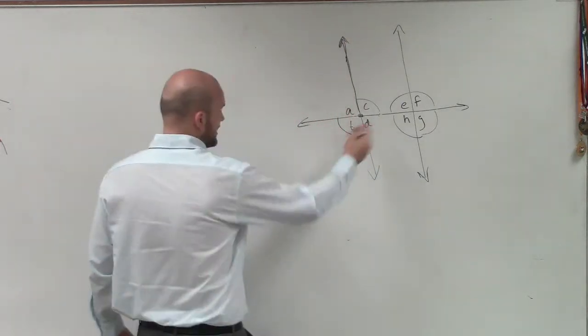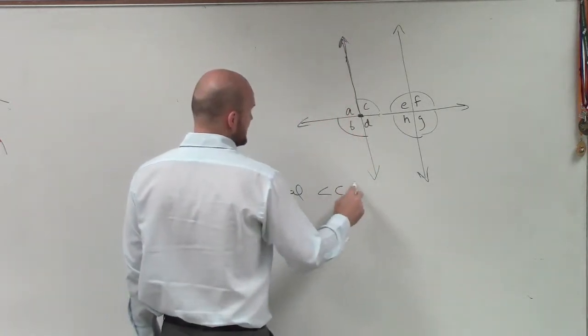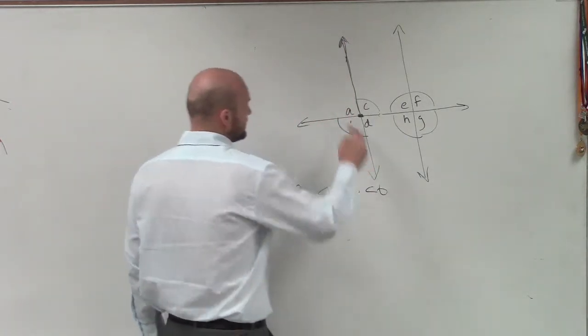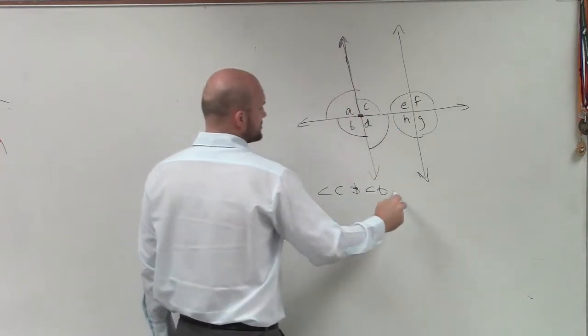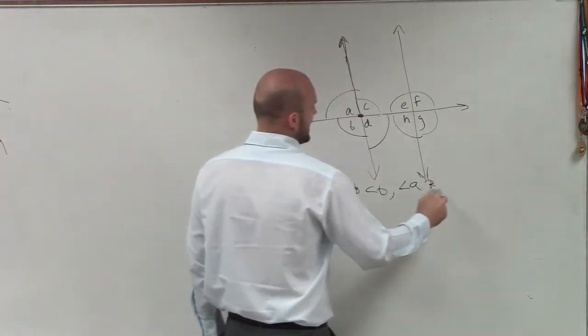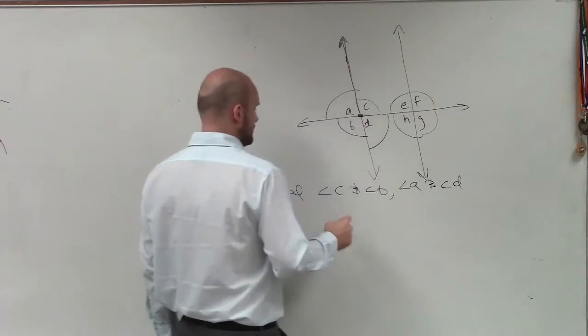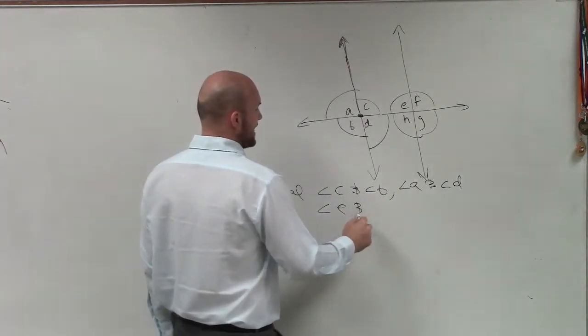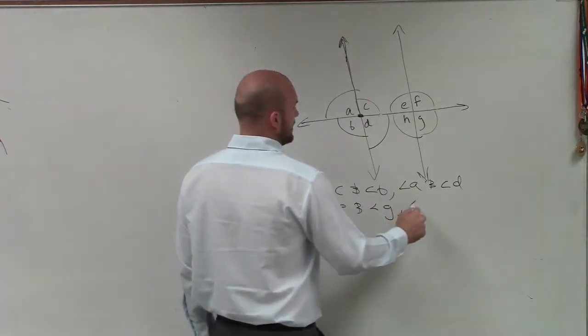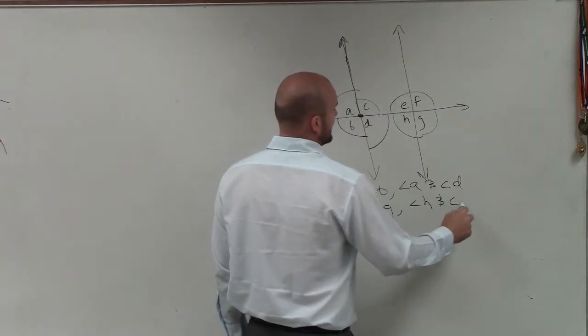So an example of vertical angles, you guys can see, I can say angle C and angle B. You could also say angle A and angle D. Then you could say angle E and angle G, and angle H and angle F.